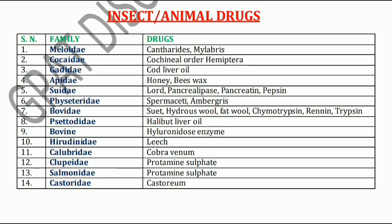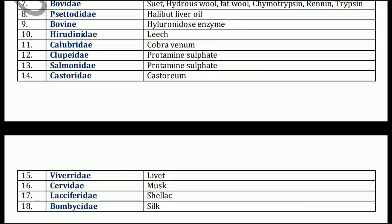Next family is Cetodidae family. Cetodidae family includes Halibut liver oil. Bovine family includes Hyaluronidase enzyme. Next, Hirudinidae. Hirudinidae family includes Leech. Now, Colubridae family — Cobra venom. Next, Clupeidae family. Clupeidae family includes Protamine sulphate, as does the Salmonidae family. Next family is Castoridae family, which includes Castoreum.